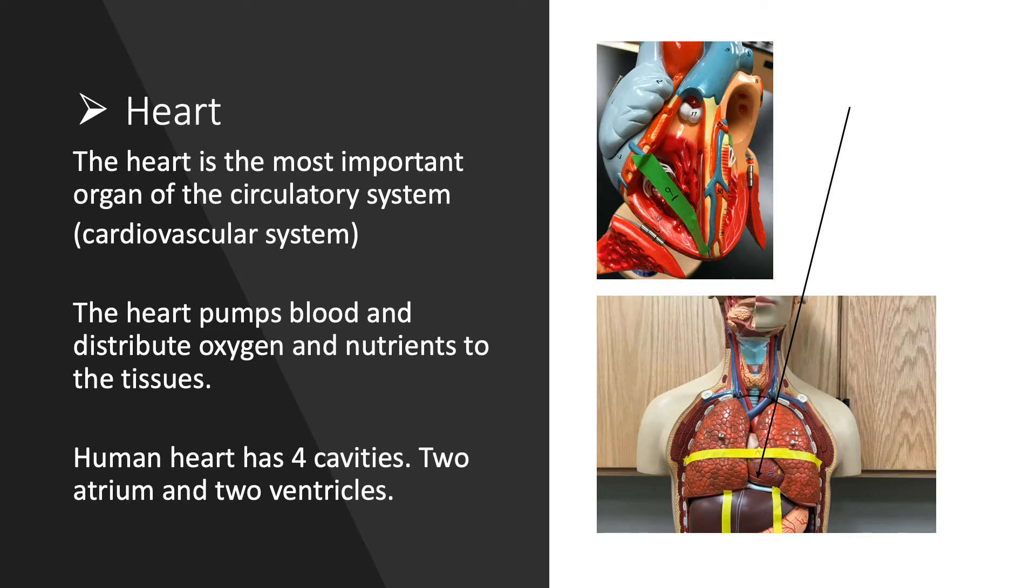The heart is the most important organ of the circulatory, or more correctly, the cardiovascular system. The heart pumps blood and distributes oxygen, nutrition, hormones, and proteins to the tissues.